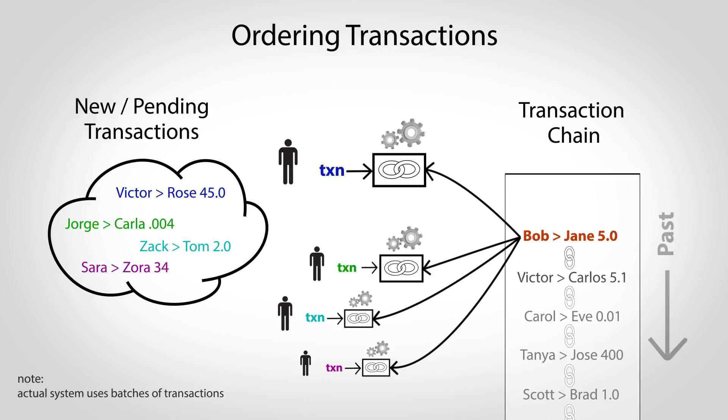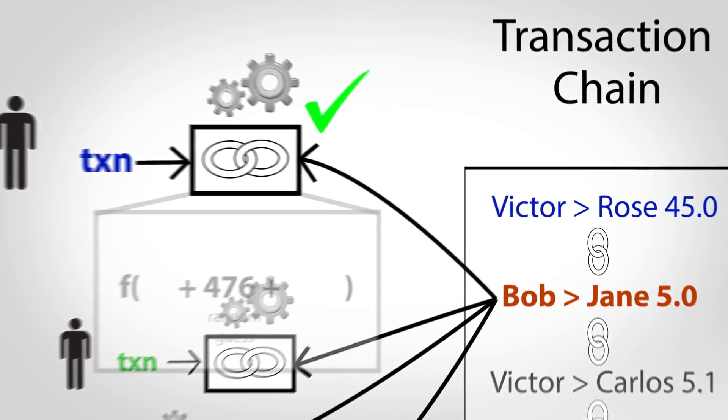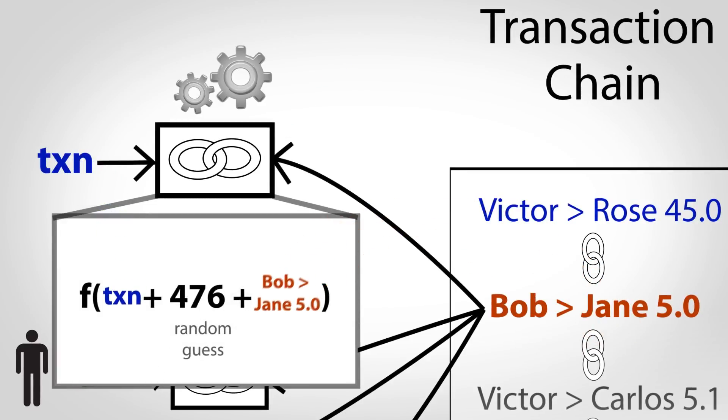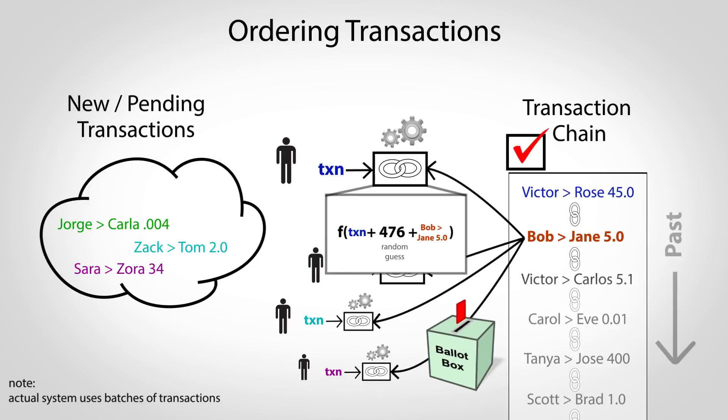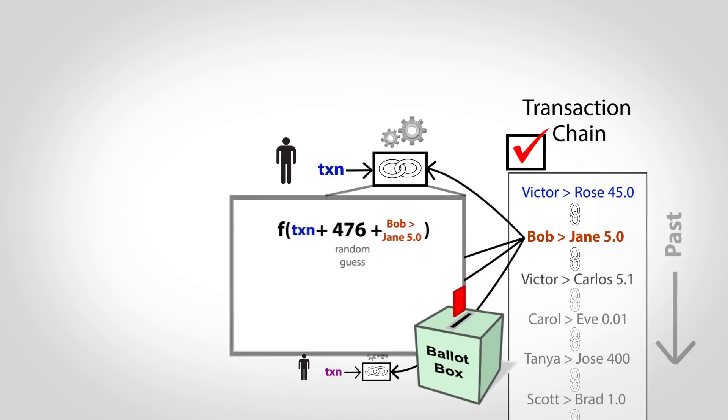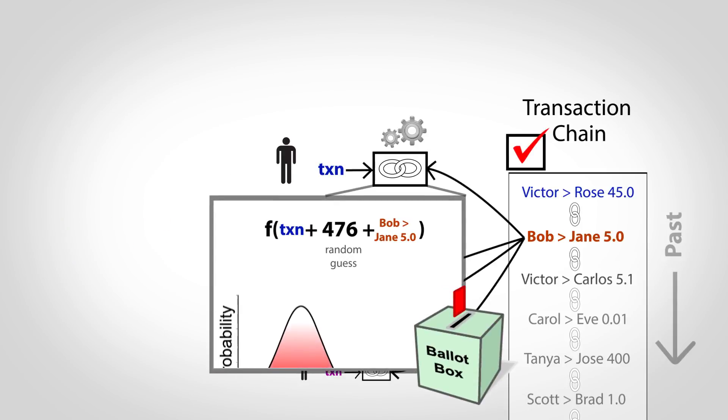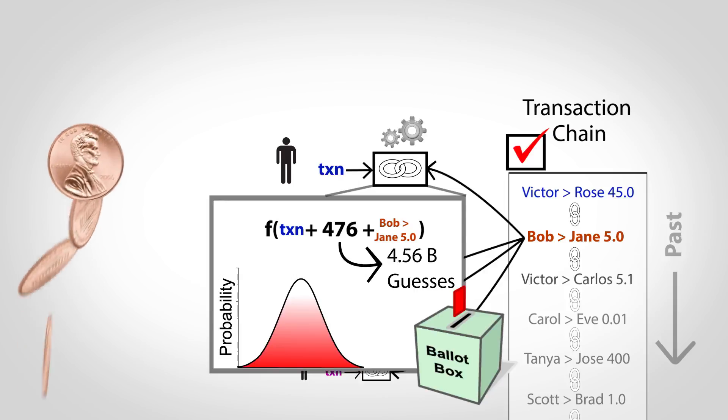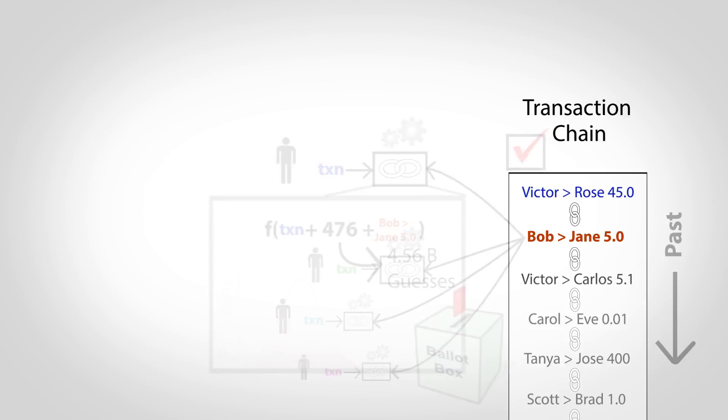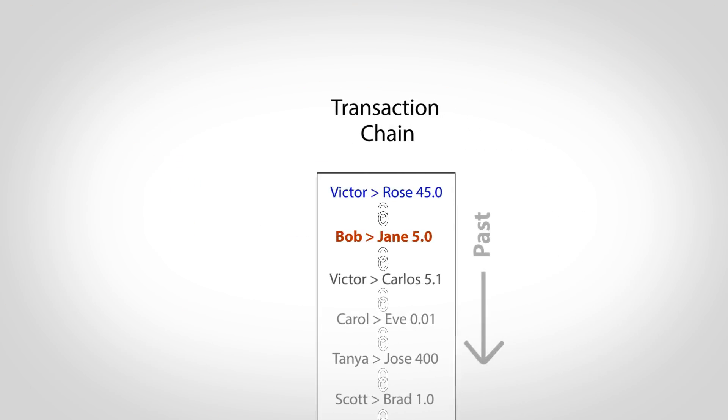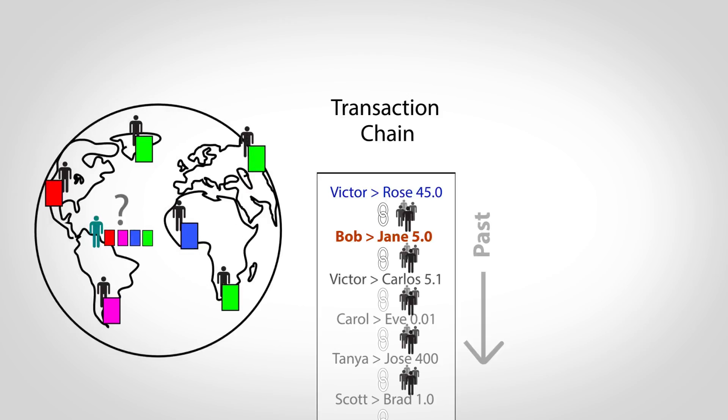The transaction ordering process described before actually provides the voting system. Part of the input to the linking problem is a transaction from the end of a chain, so each guess is effectively a vote for that chain. But how are all the votes tallied? Because the cryptographic hash function has well-defined statistical properties, you can look at any given answer and estimate how many guesses it took to find it, just like estimating how many coin flips it would take to get 100 heads in a row. So the links in a chain not only put transactions in order, but also act as an effective vote tally, making it easy to see which chain most people are using.